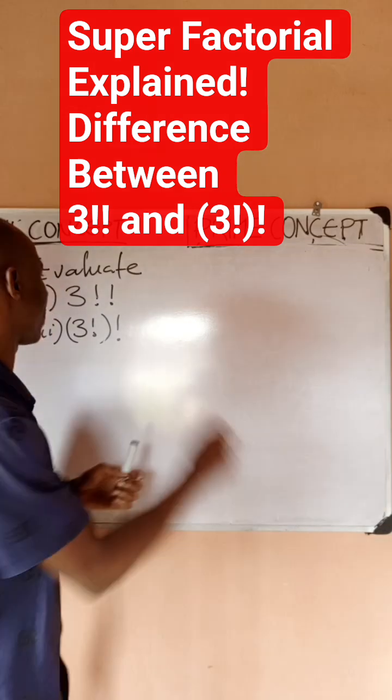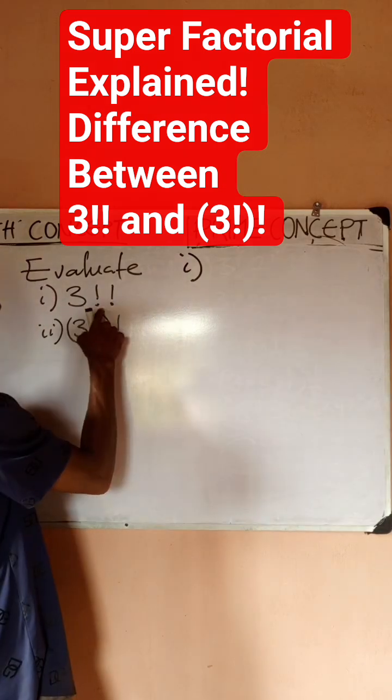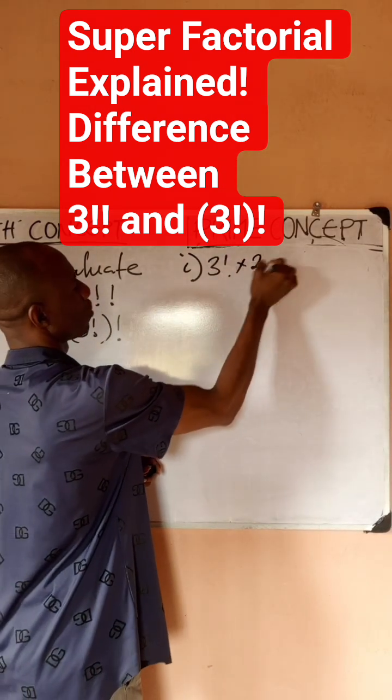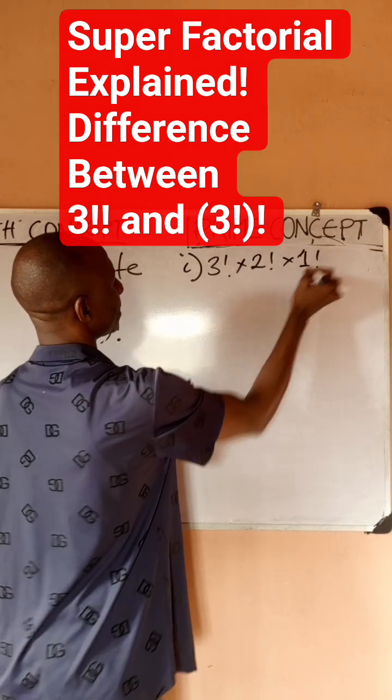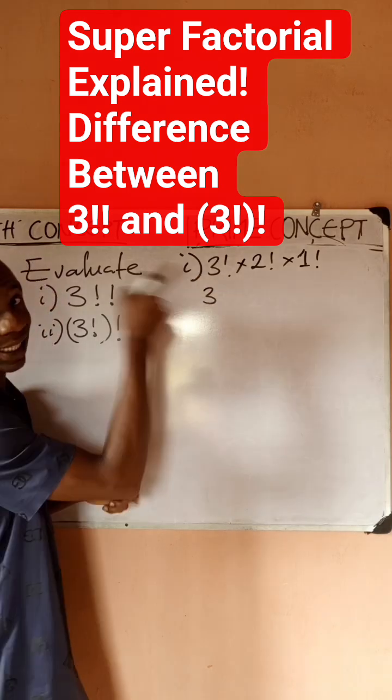So very quickly, 3!! just means 3! times 2! times 1!. That is what this thing means. So it means I would have 3! and I'll decrease it, so it's going to be 3×2×1, times 2! which is just 2×1.